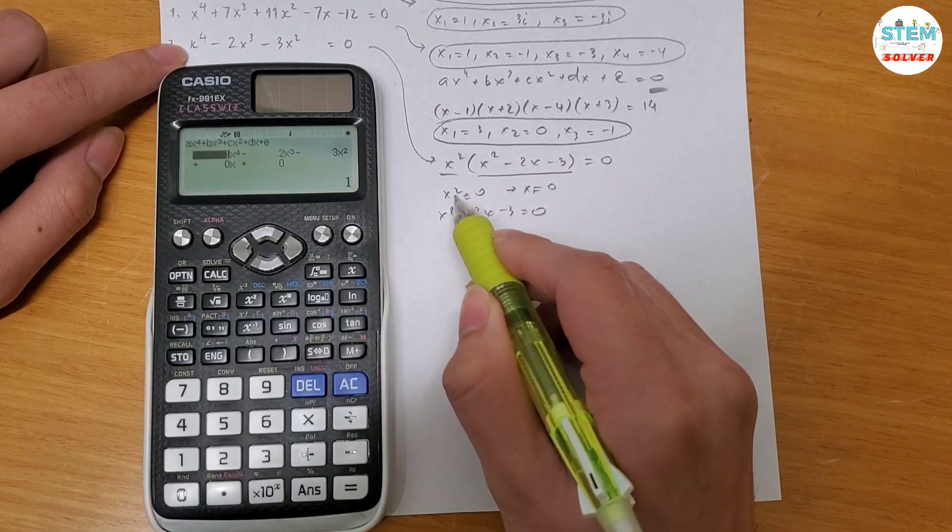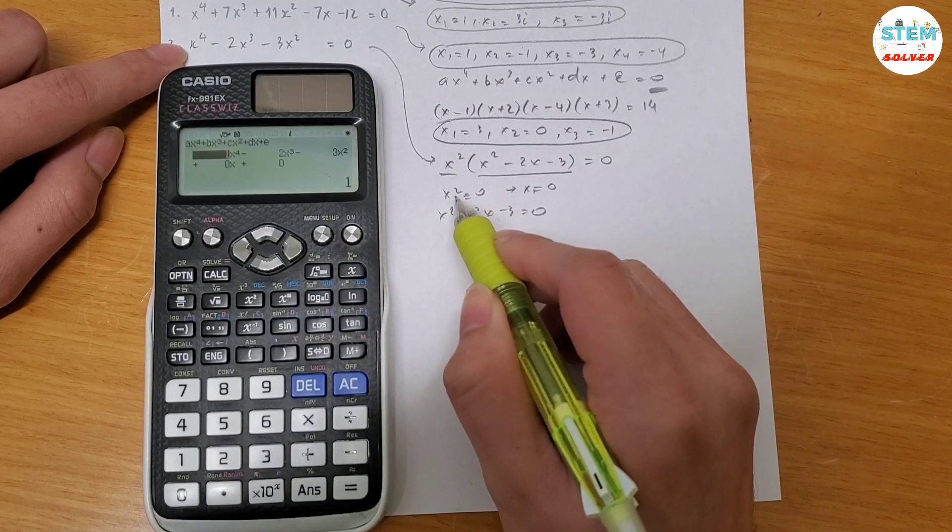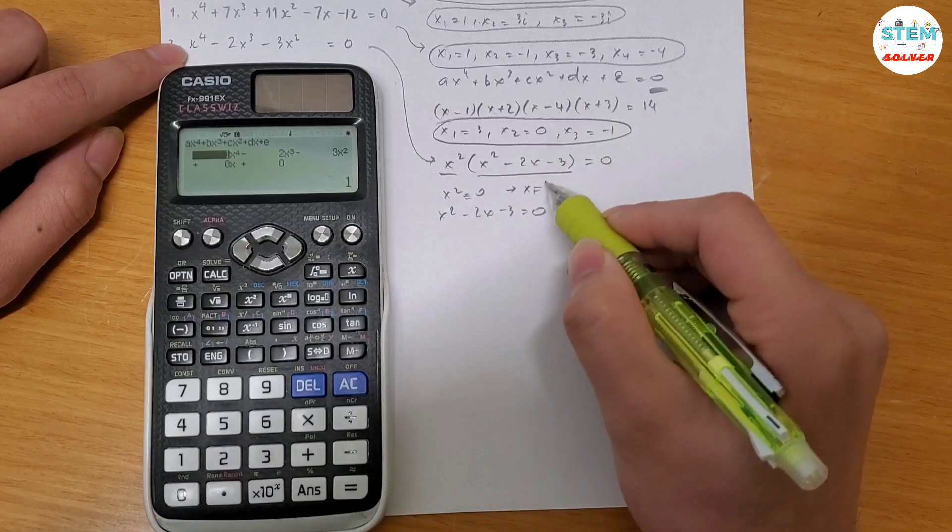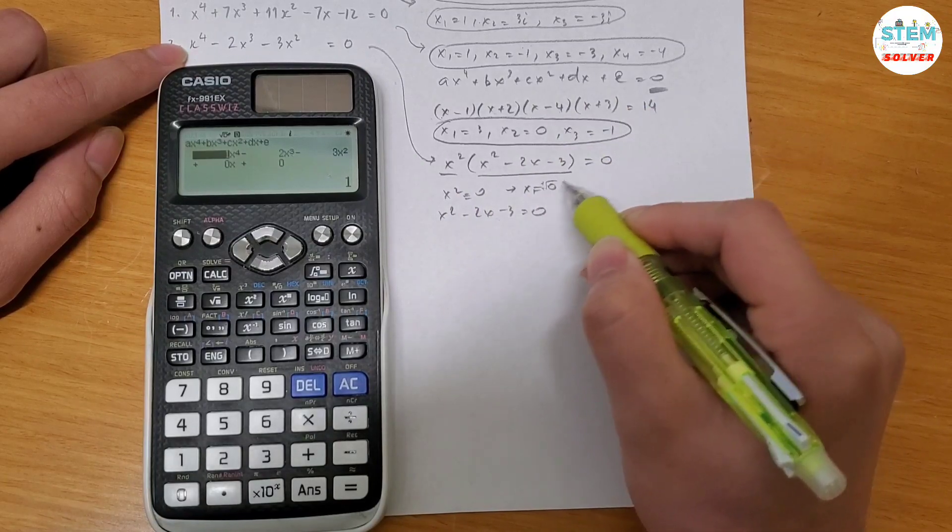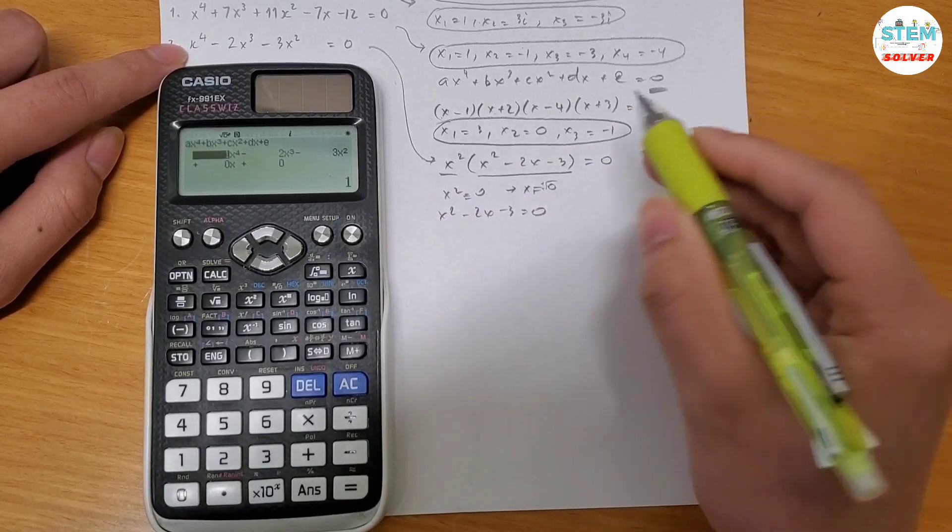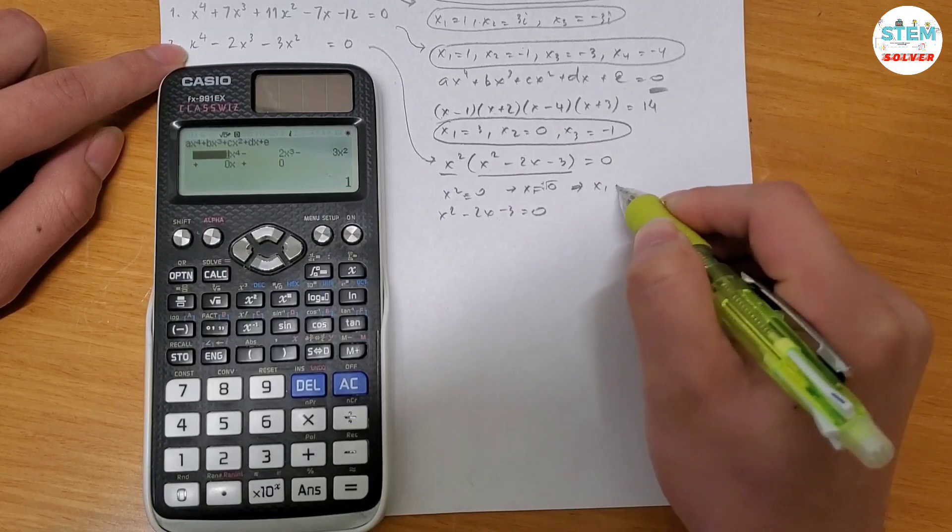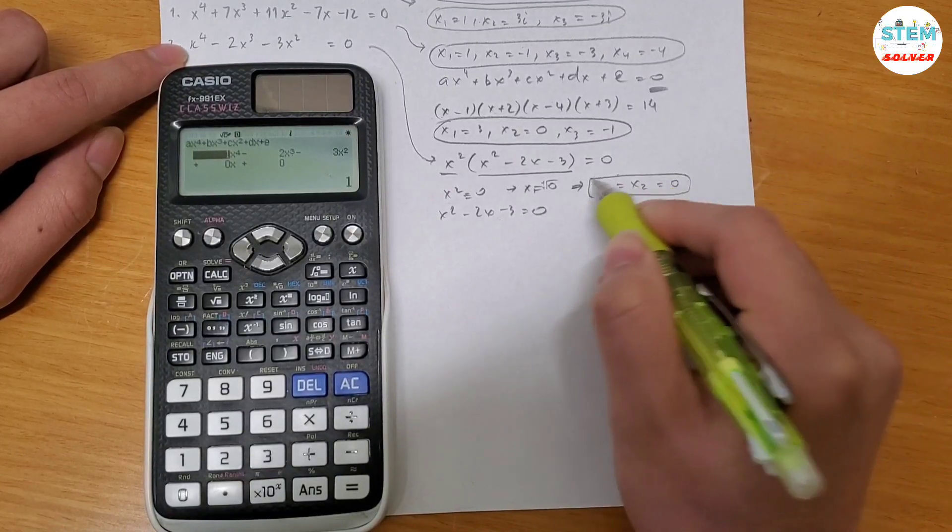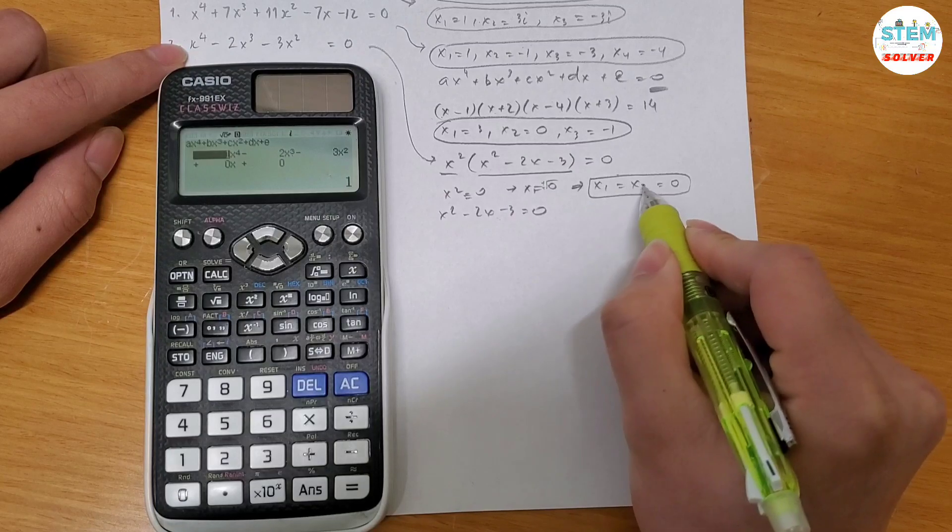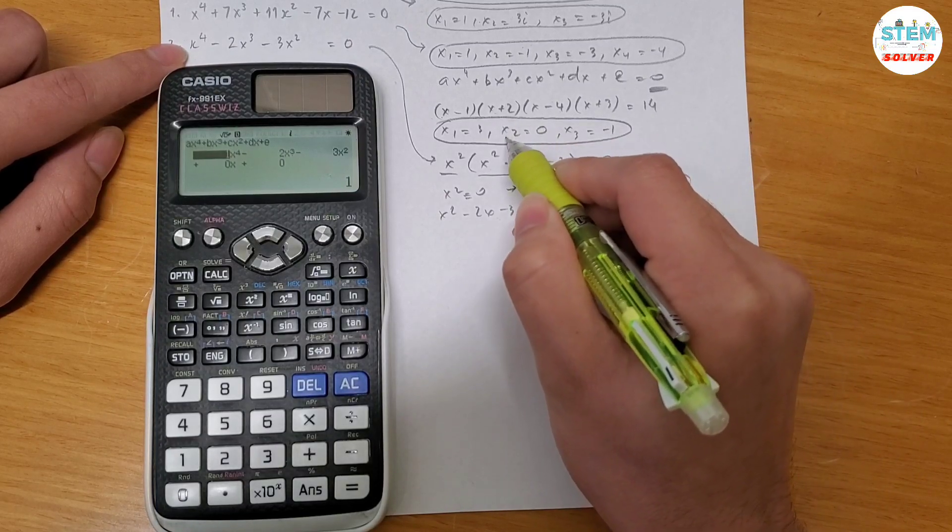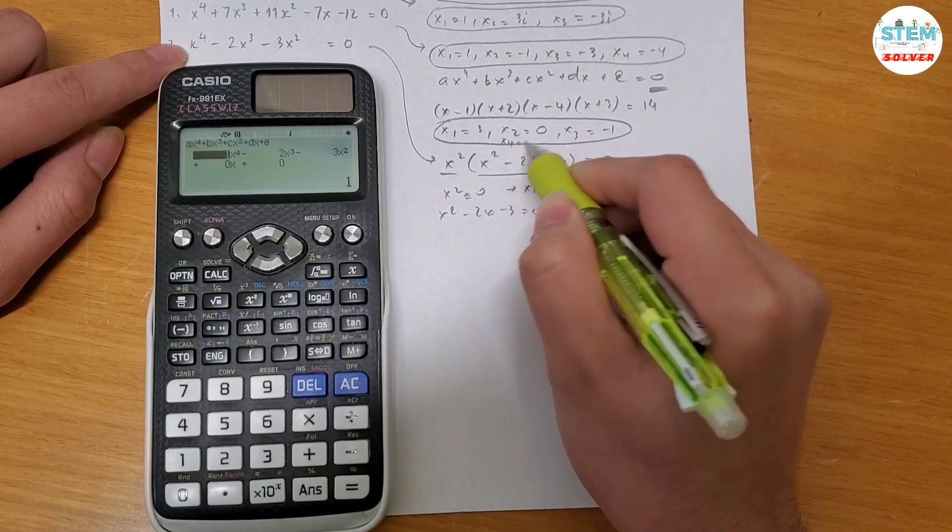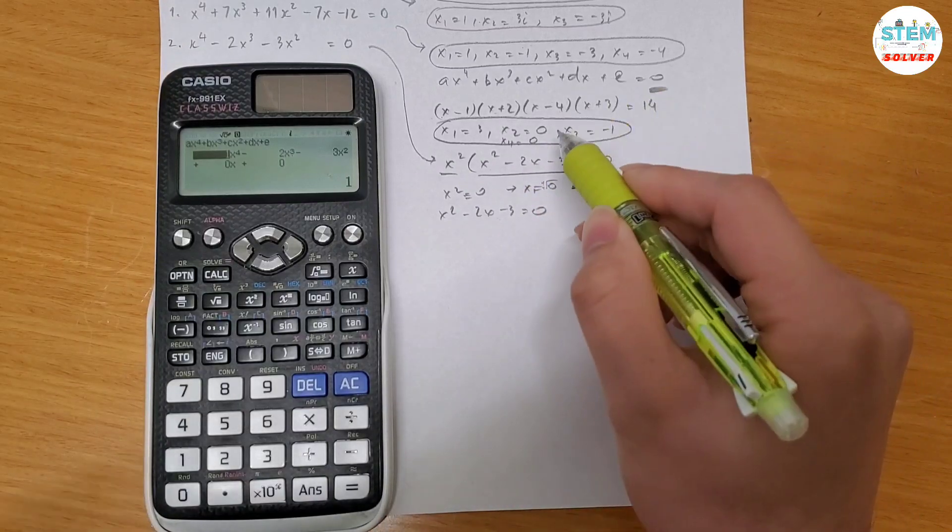But because this is a second degree equation, so it has to be square root of plus and minus 0. But because 0 is not positive or negative, x1 is equal to x2 is equal to 0. So you have 2 solutions for 0. So right here, I have x2 equals to x4 is also equal to 0.